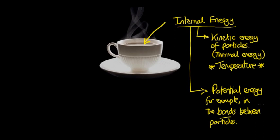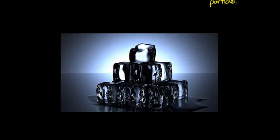A good example of how potential energy in a substance can change is when that substance changes state, when it, for example, melts or when it boils.